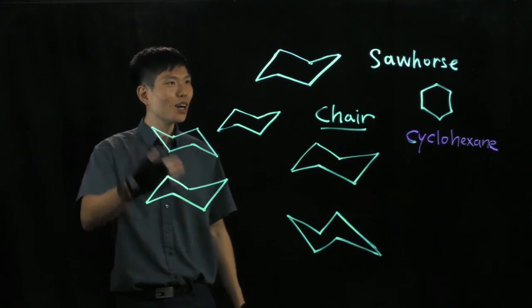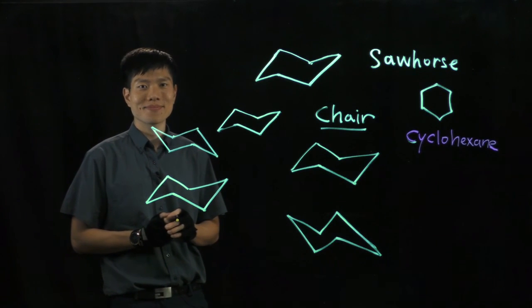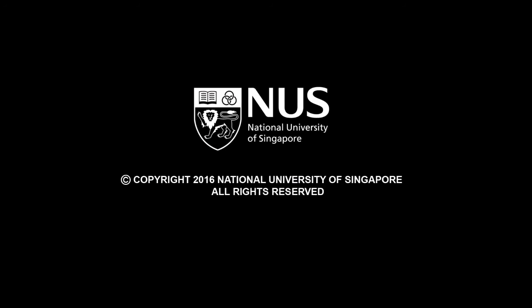And this is another form of sawhorse chair conformation of the cyclohexane.